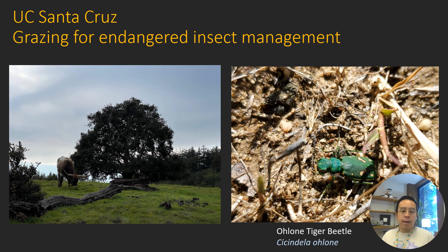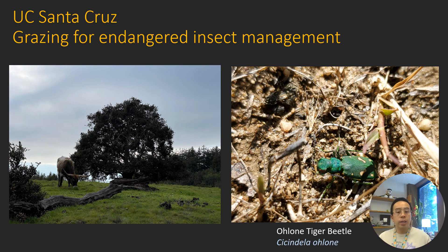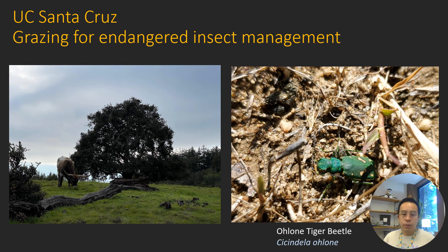The next example is the Ohlone tiger beetle from UC Santa Cruz, an endangered insect that occurs in the coastal prairies in the Santa Cruz area. On the UC Santa Cruz campus, certain grasslands support populations of this endangered species. The Ohlone tiger beetle — named after the tribal group that occupied the area — occurs in various patches across Santa Cruz's coastal prairies, such as Mima Meadow.